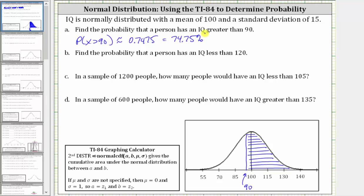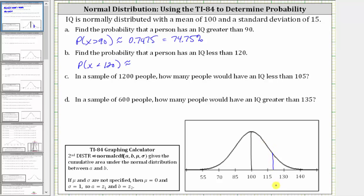For part B, find the probability that a person has an IQ less than 120, which is P(x < 120). Going back to the graph, 120 is approximately here. Because we're looking for the probability that a person has an IQ less than 120, we're looking for the area to the left of 120, which means we'll have to exaggerate the lower bound using the normal cumulative density function tool.